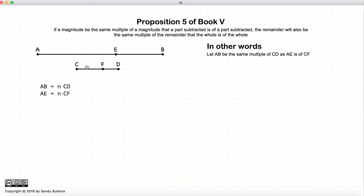So let's start with having a number of lines such that AB and AE are equal multiples of CD and CF respectively.